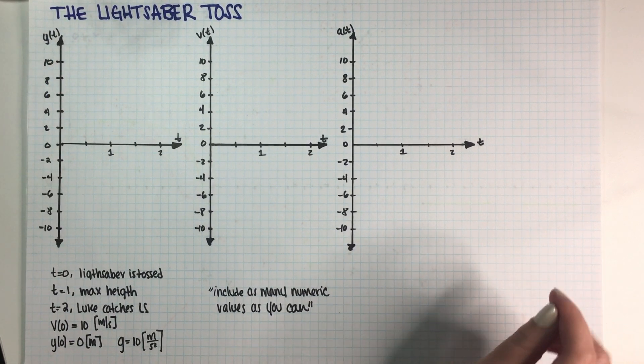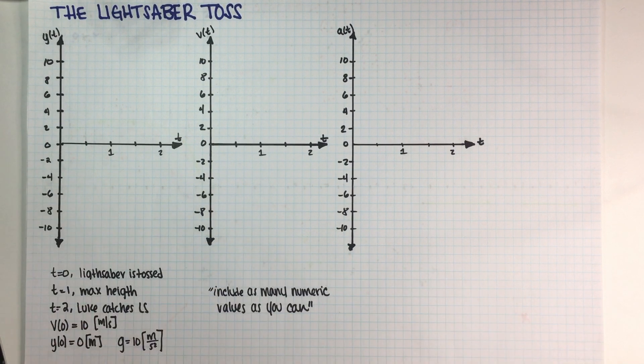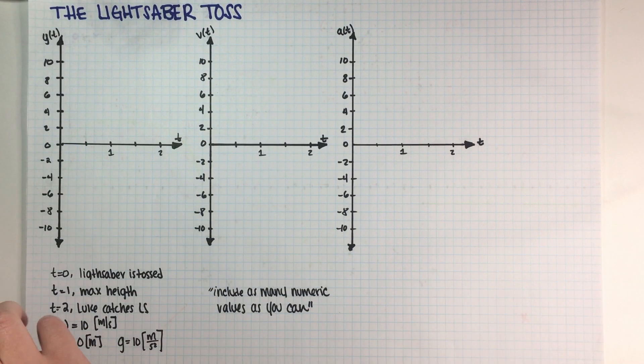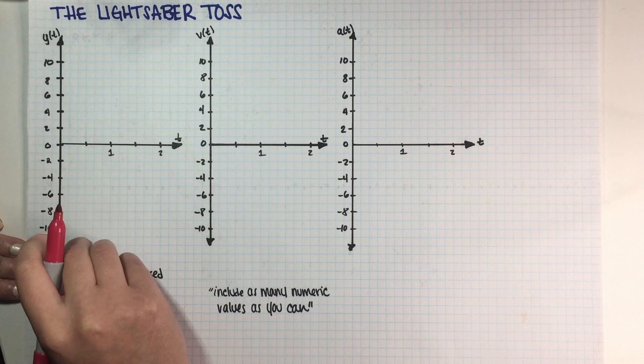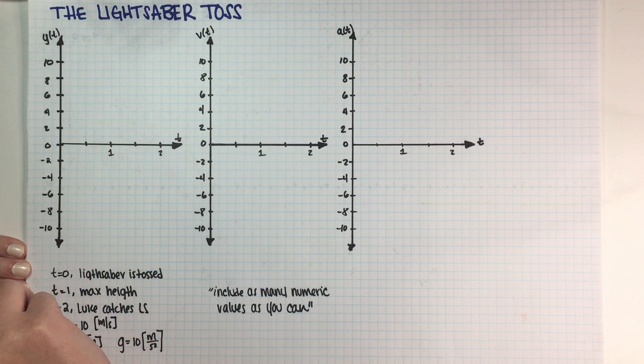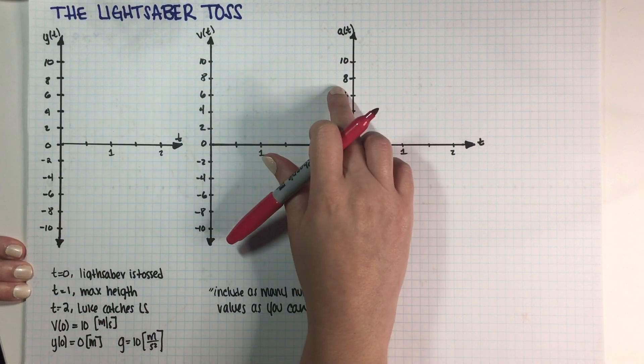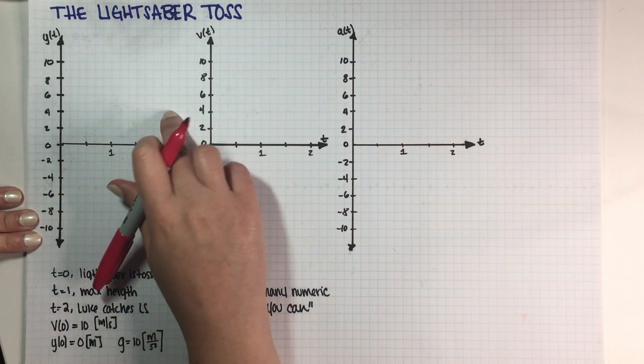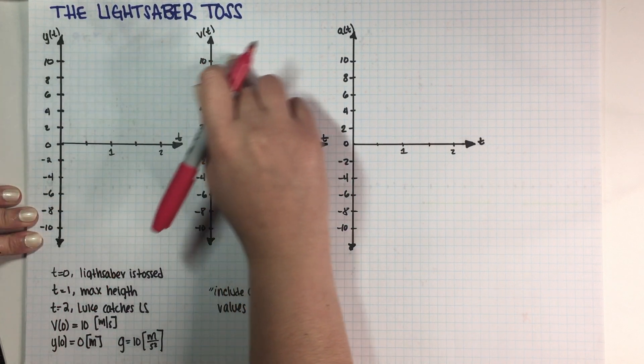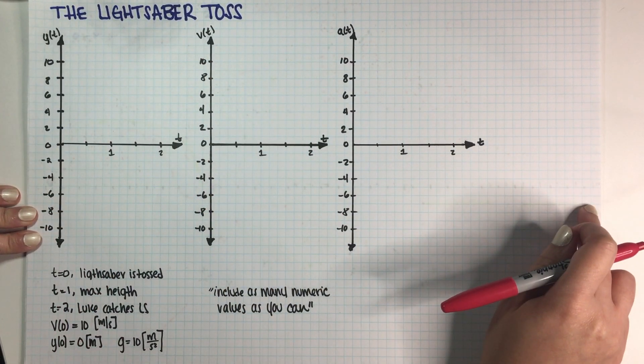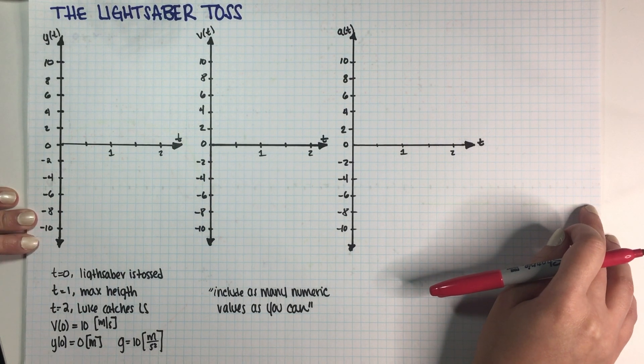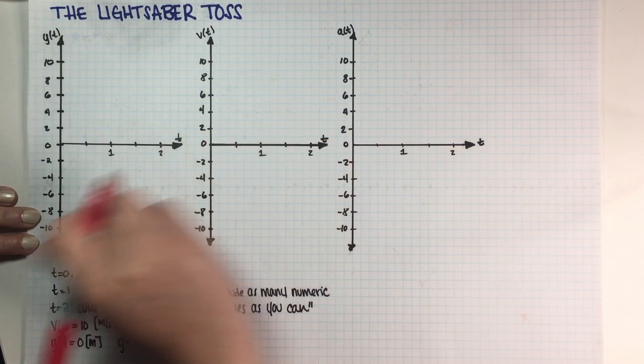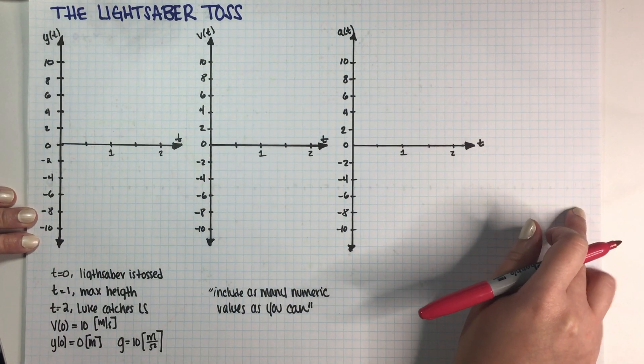I think just by looking at this problem that the easiest way to start it is by plotting the acceleration. So this is a lightsaber toss, which means R2D2 basically launched an object. He launched an object, and then the object is just basically moving in a parabola, because it is not really being hit by anything, or it's not experiencing any sort of forces except gravity, and then Luke basically catches it on the other side.